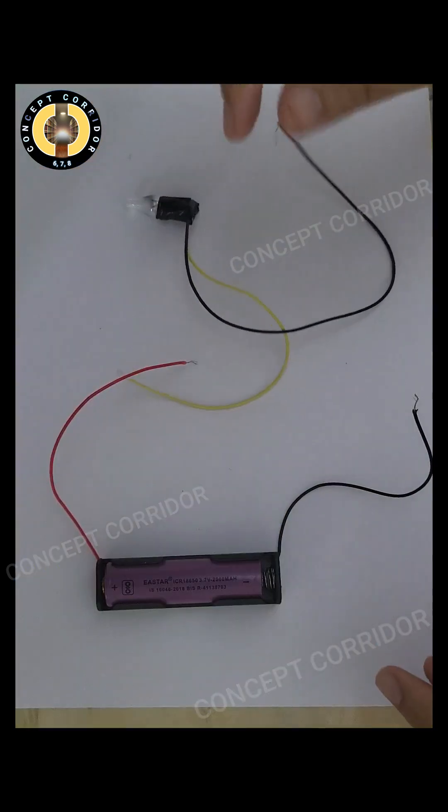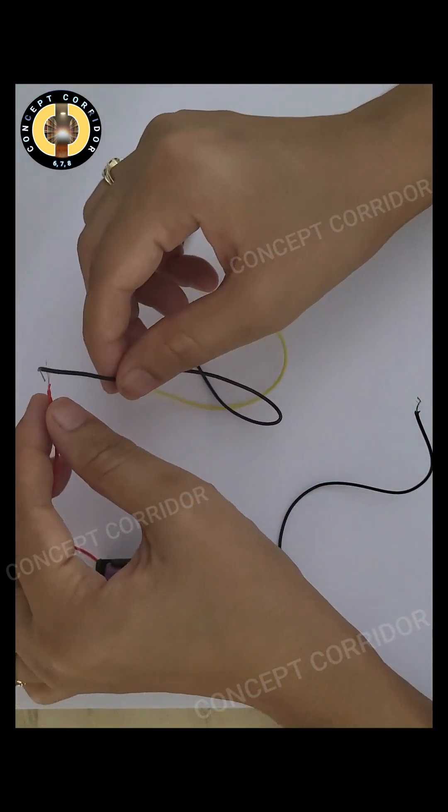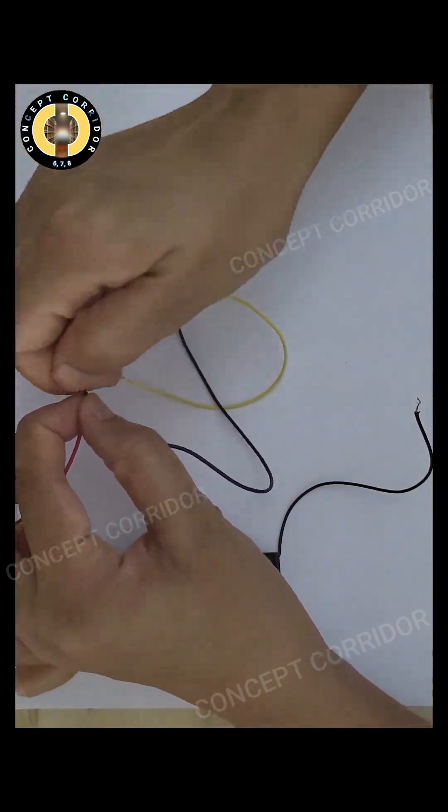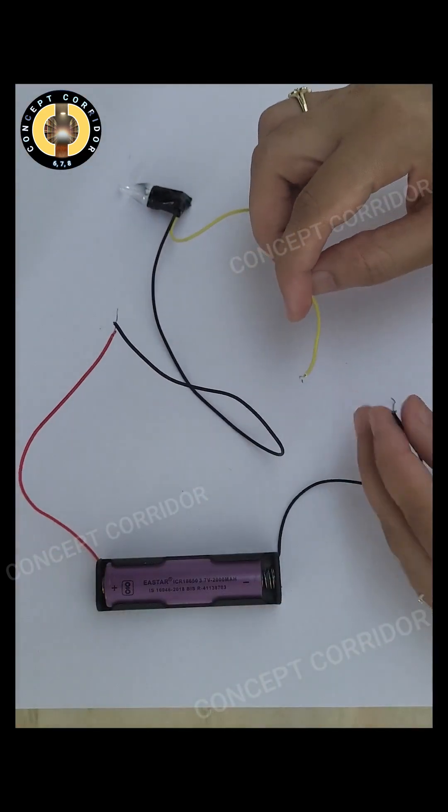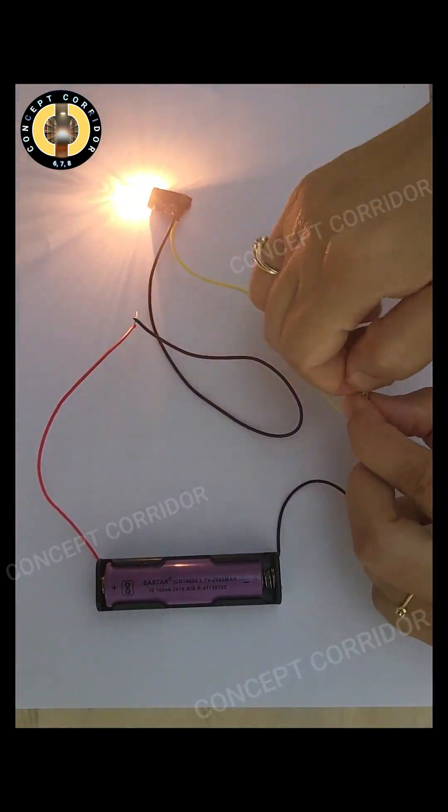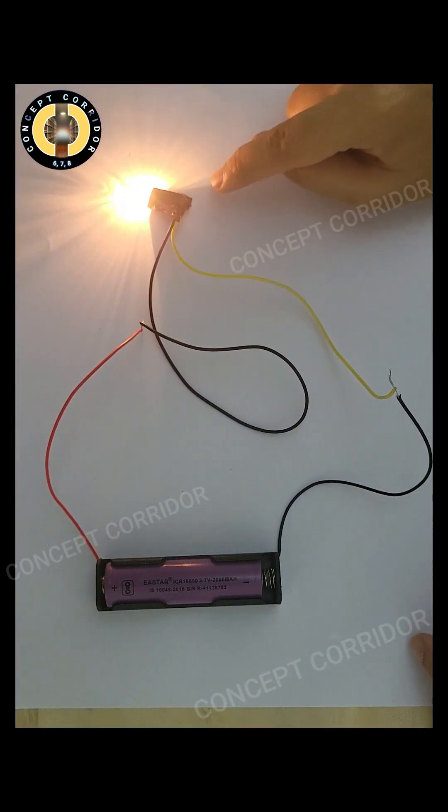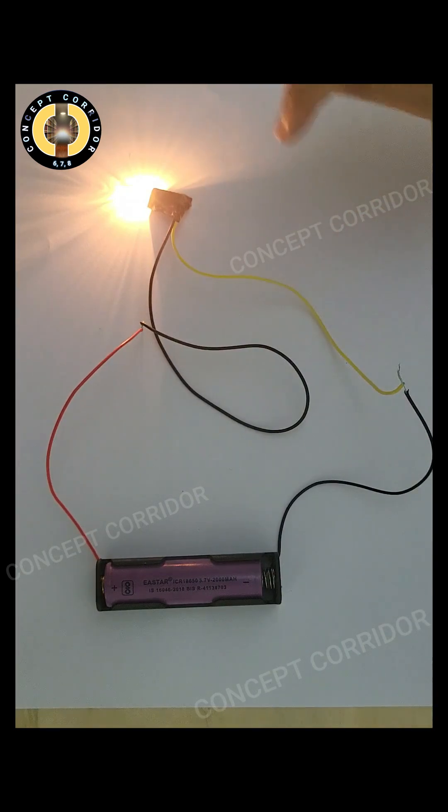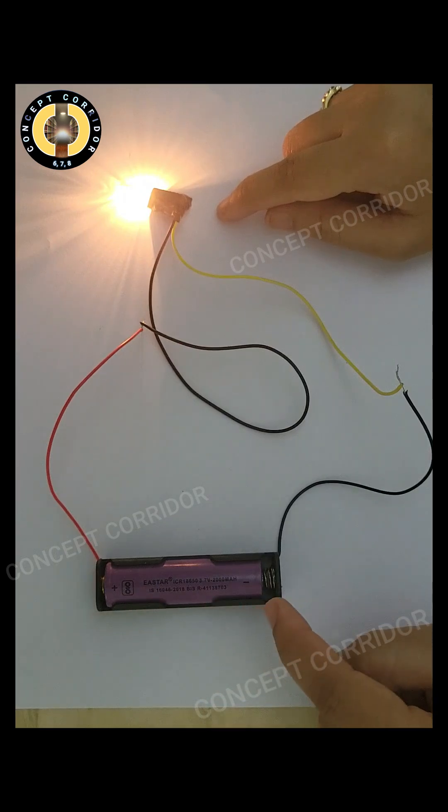Now, let's swap these wires. I am joining the black wire to the positive terminal and yellow wire to the negative terminal. Still, this bulb is glowing. This shows that bulb will glow as long as the circuit is complete. It does not depend on the terminals to which it is attached.